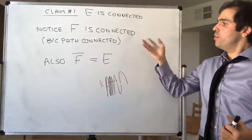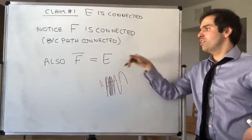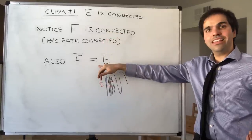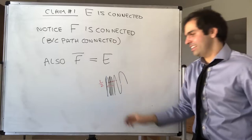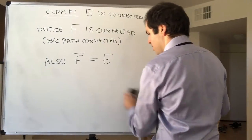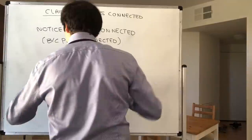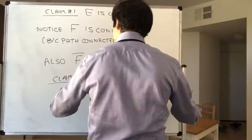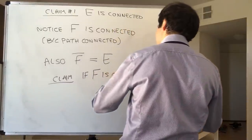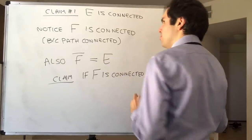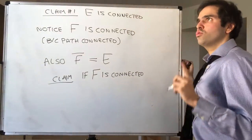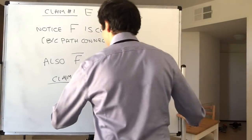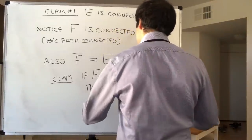So all we really need to show in order to prove E is connected is that whenever you take the closure of a connected set, you get something connected. General claim: if f is connected (in ℝ²), then its closure f̄ is connected.